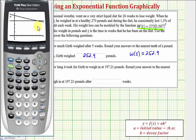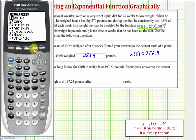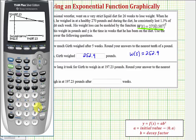So we want to find the x coordinate or t coordinate of this point of intersection. That'll be how long it took for Girth to weigh 197.23 pounds. So we'll press second, trace for calculation, option five for intersection. Enter when it says first curve. Enter for second curve. And when it says guess, we can move the cursor closer to the point of intersection, or we can just press enter.